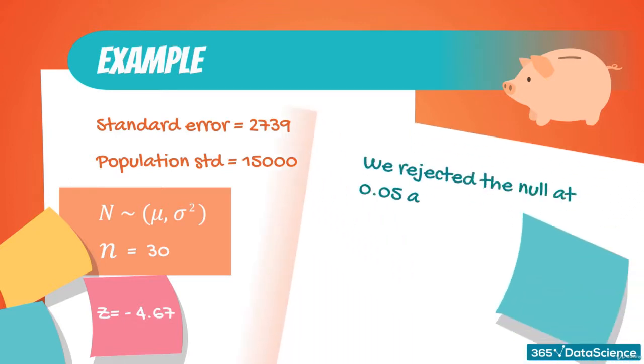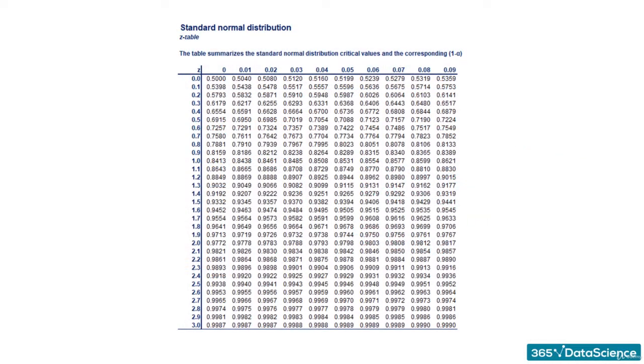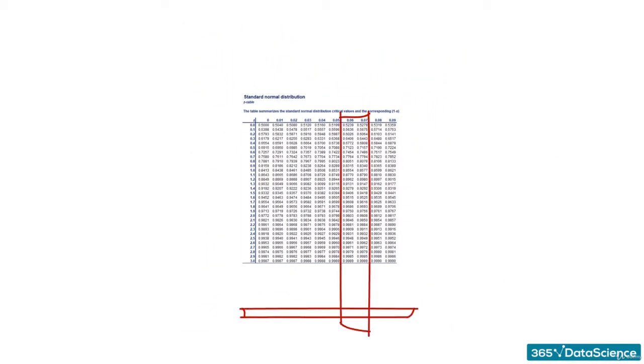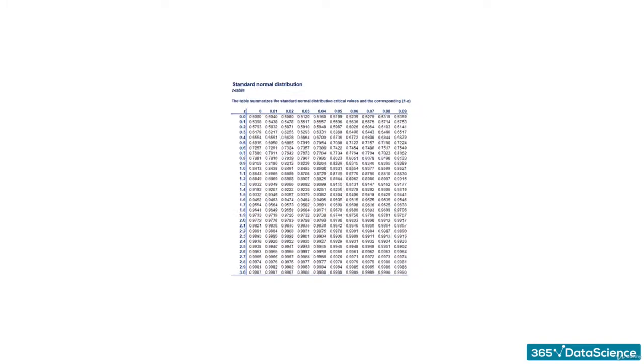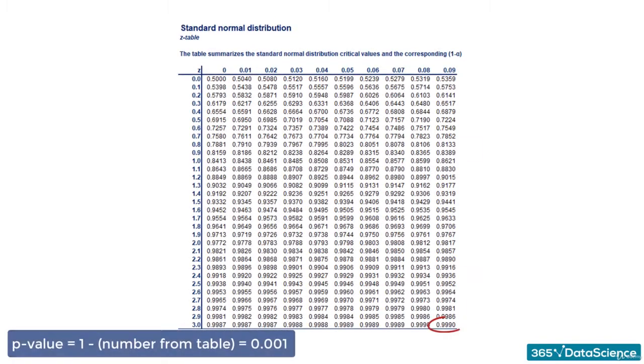We rejected the null hypothesis at significance levels of 0.05 and 0.01, but we wanted to know how much lower we could go. We could check the z-table for plus 4.67, which gives us the same result as minus 4.67. In most z-tables, you would not even find this value as it is so large. Thus, we round up to the closest value available and get 0.0001.